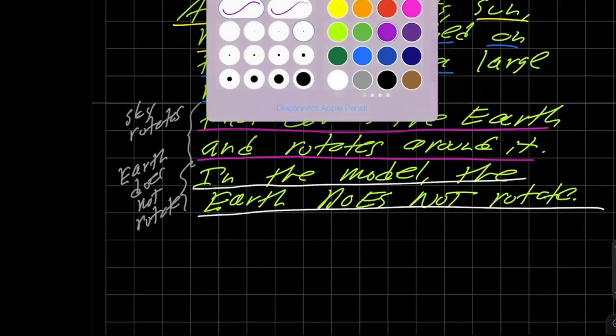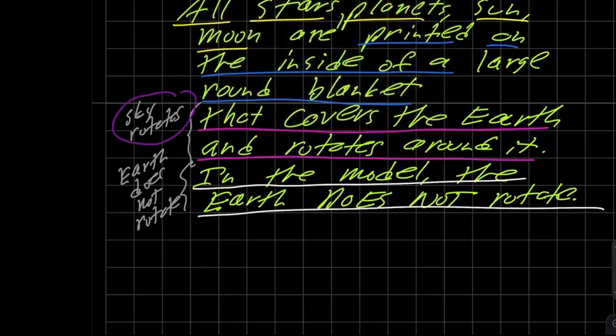But it turns out in physics, it doesn't really matter what you're talking about here as long as one is moving with respect to the other. So in the actual world we know that the earth rotates and the sky is still, but in this model we're going to let the sky rotate and the earth be still. So as long as the relative speed between them are the same, we would sort of expect that the relevant things we see are going to be similar and indeed that is true.